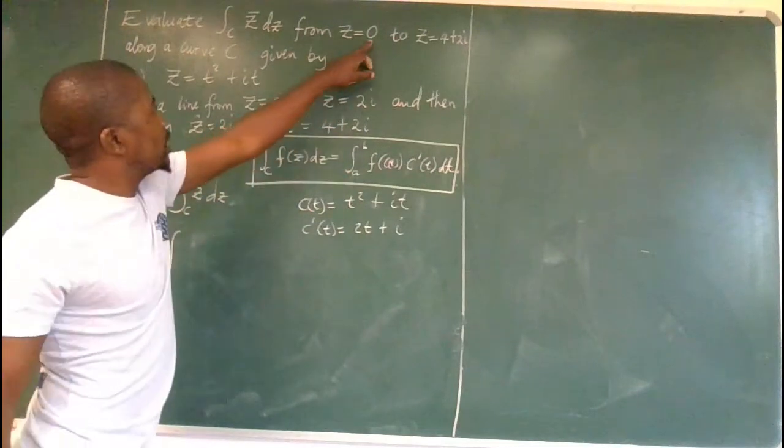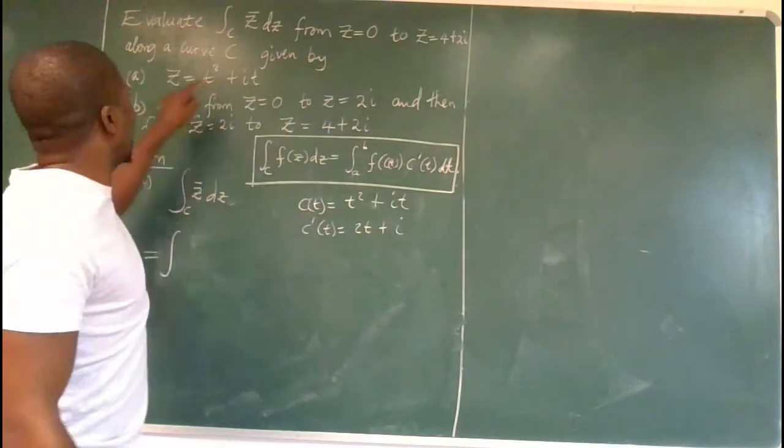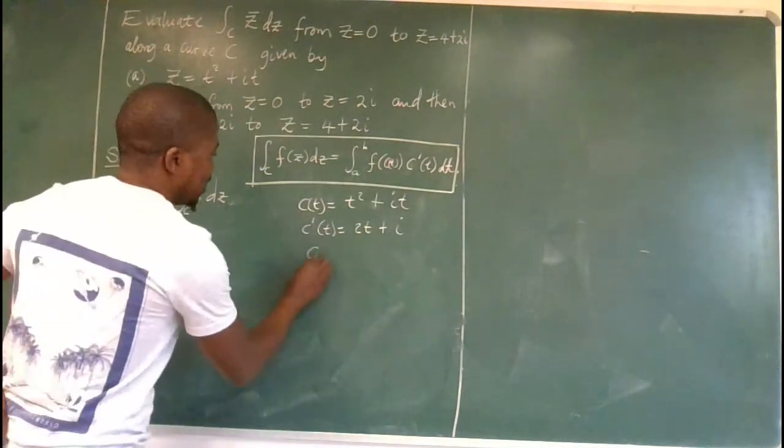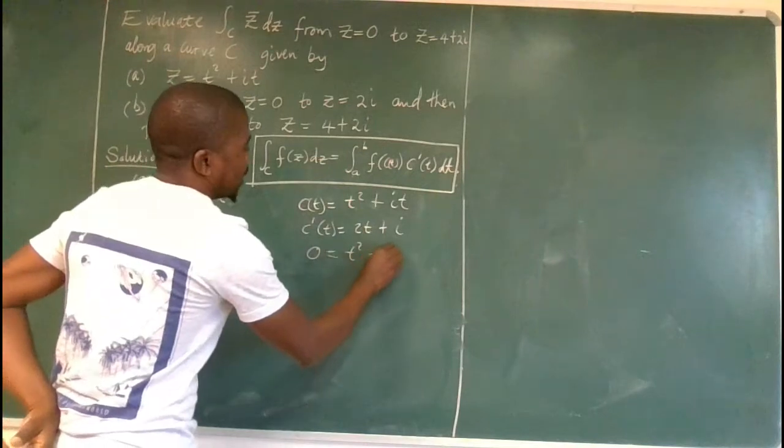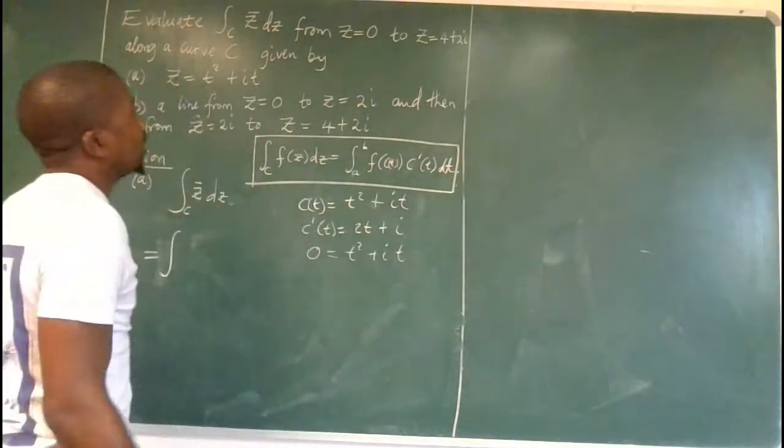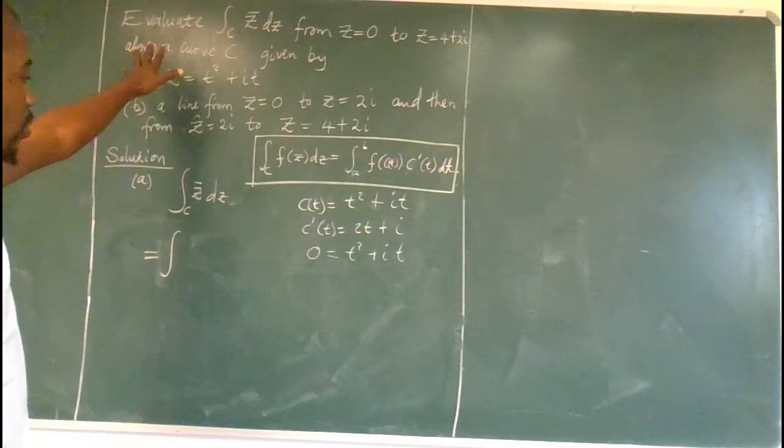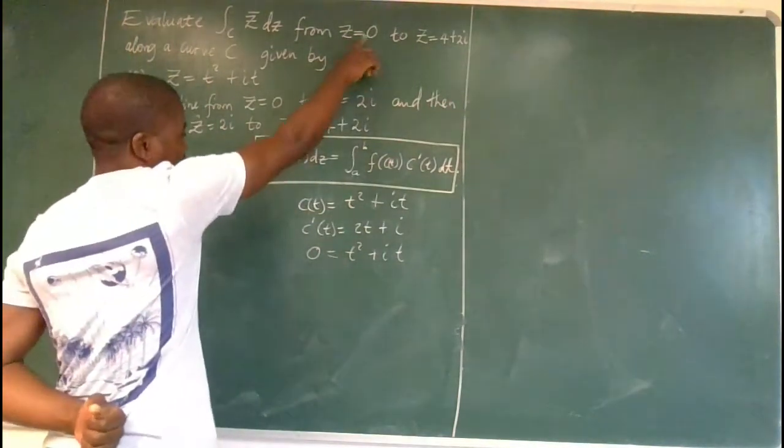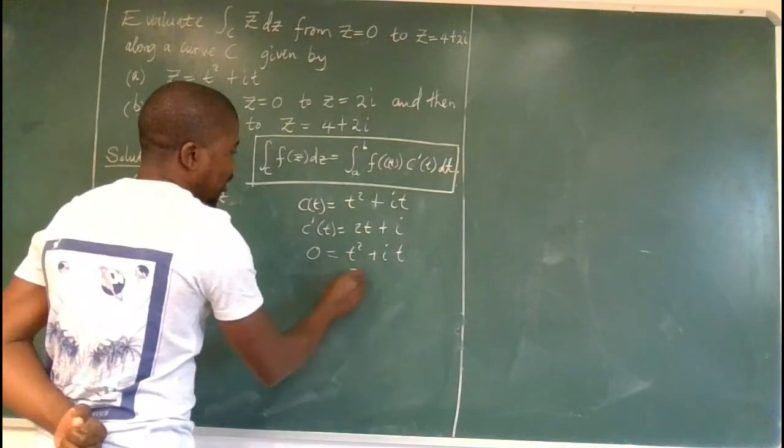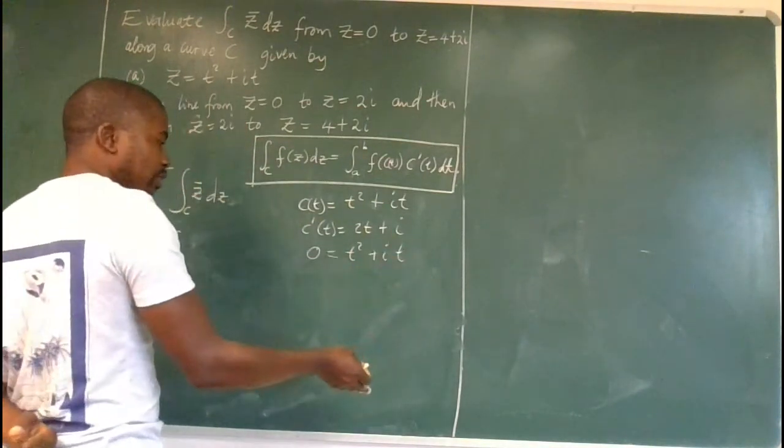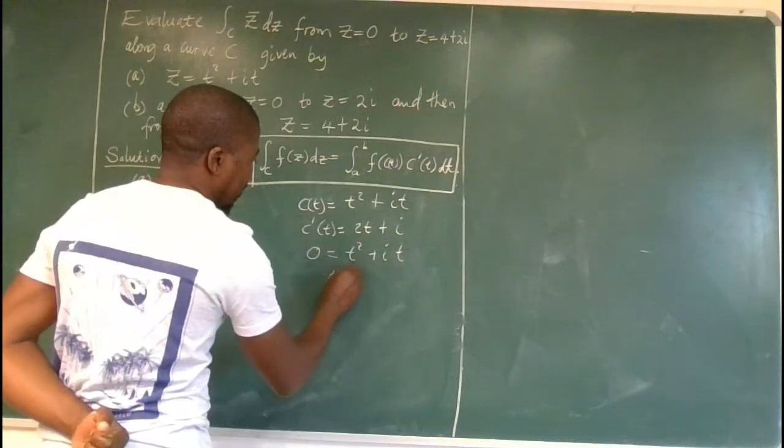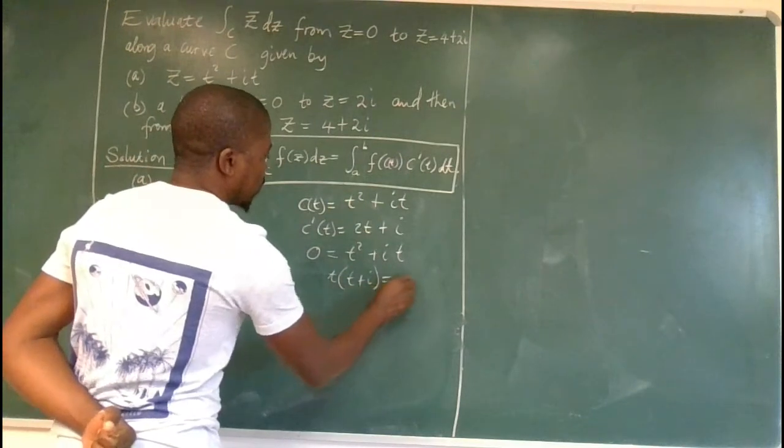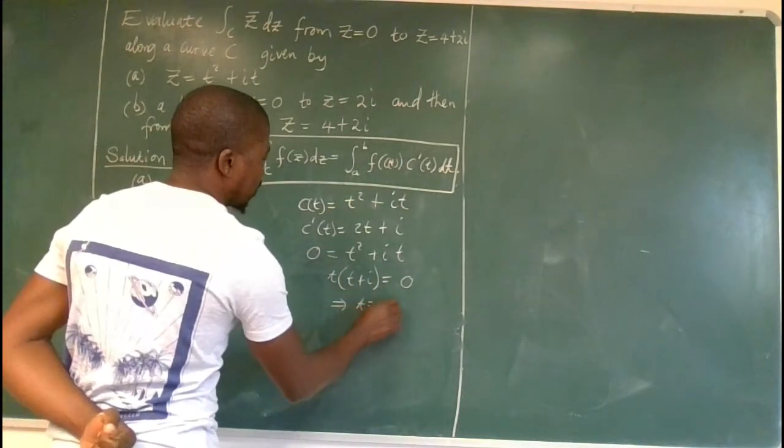So we say when z is equal to 0, that's where we are starting from. So we place 0 here. 0 is equal to t squared plus i t. We want to find the initial value of this t, when z is equal to 0, our starting point. So if we do all this, you can factor out t. You have t times (t plus i) is equal to 0, which then implies that t is equal to 0.